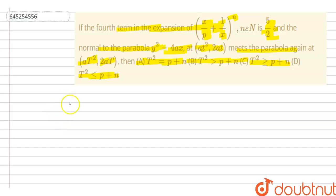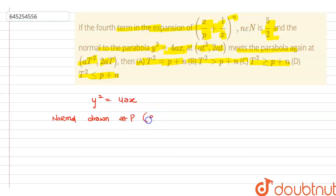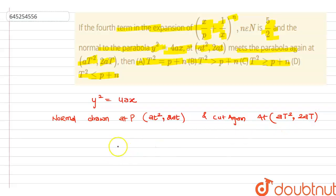First, we simplify the normal to the parabola. The parabola equation is y² = 4ax. The normal drawn at point P(at₁², 2at₁) cuts the parabola again at point Q(at₂², 2at₂). From this, we use the known condition relating t₁ and t₂.